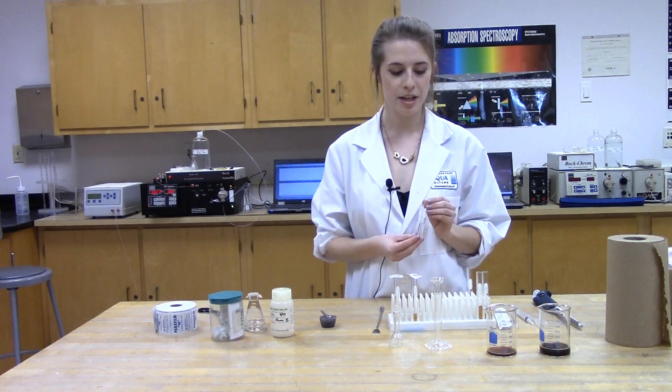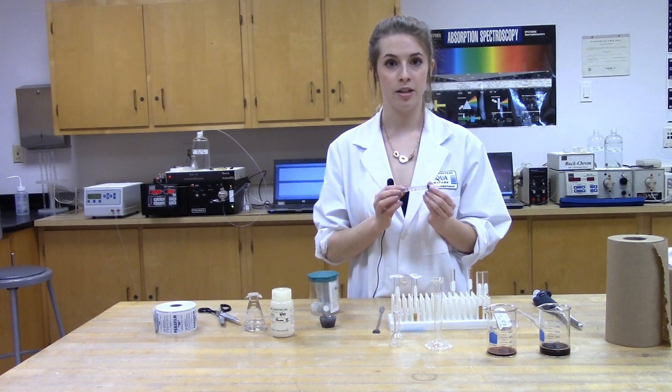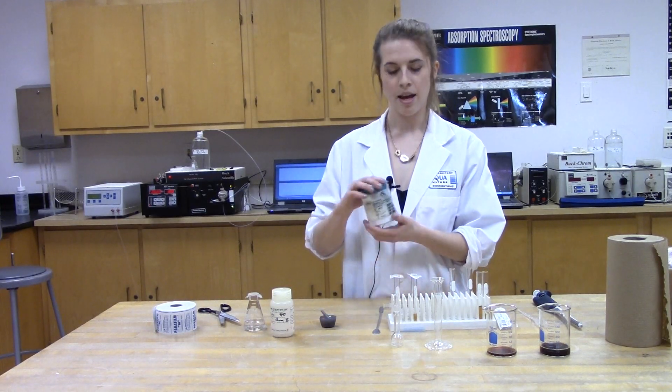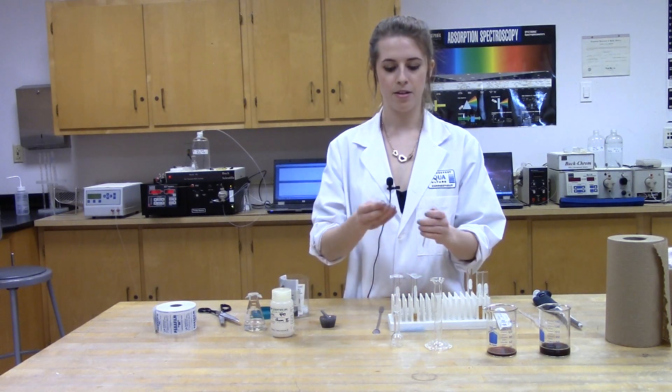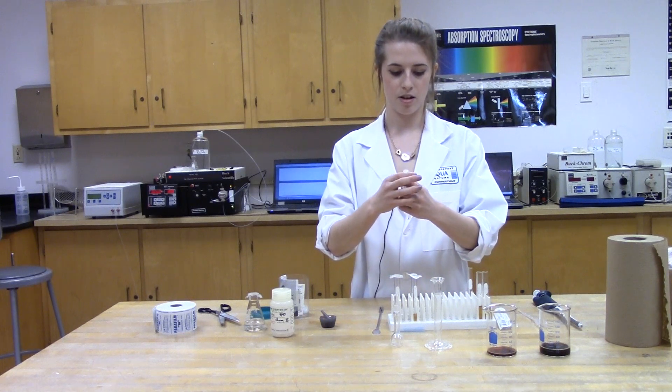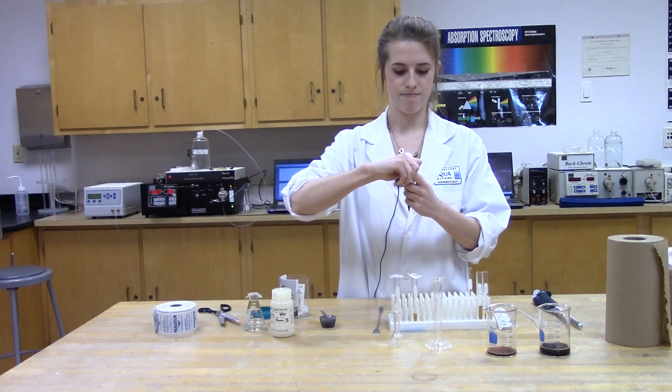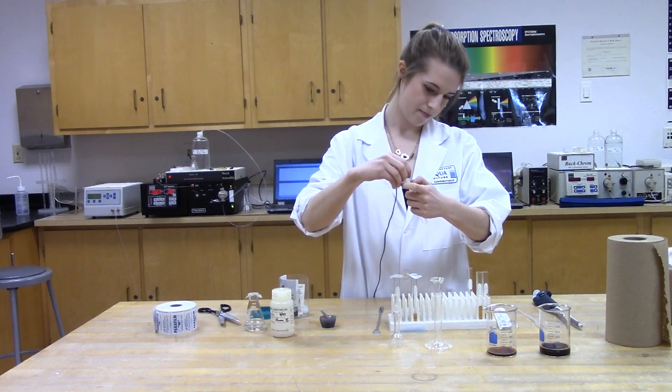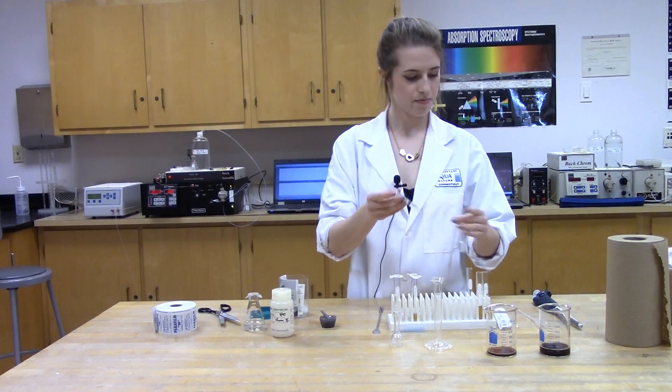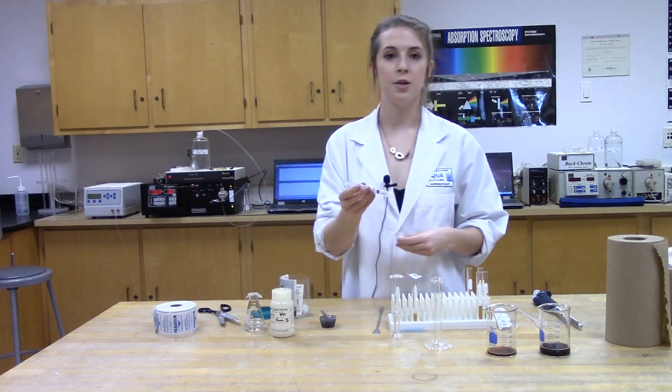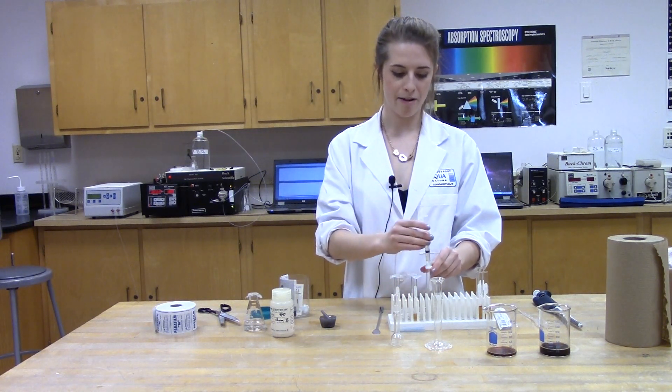To ensure it's high quality enough to run through the instrument, we're going to filter it. We can use a three milliliter syringe and the filtering pads. The first step is to fill the syringe with the caffeine and mobile phase mixture. For the HPLC, you only need a small amount.